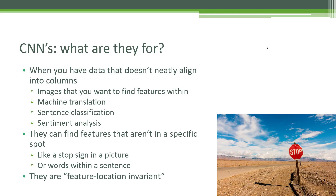Usually you hear about CNNs in the context of image analysis, and their whole point is to find things in your data that might not be exactly where you expect it to be. We call this feature location invariant — if you're looking for some pattern or feature in your data but you don't know where exactly it might be, a CNN can scan your data and find those patterns wherever they might be. So for example, a stop sign could be anywhere in an image, and a CNN is able to find it no matter where it is.